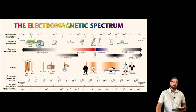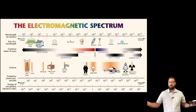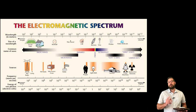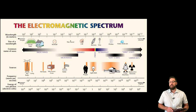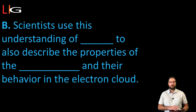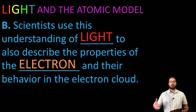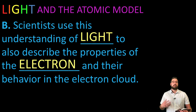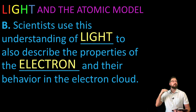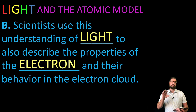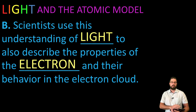Looking again at the electromagnetic spectrum: radio waves have very large wavelengths — football field size — so they have very low energy. Gamma rays have very small wavelengths, even smaller than an atom, giving them extremely high energy and making them very damaging if we're exposed to them. Scientists use this understanding of light to describe the properties of electrons and how they behave in the electron cloud, which is how Niels Bohr determined that electrons exist in specific orbitals. We can look at different substances that give off certain light and determine what substance it is based on the light emitted.